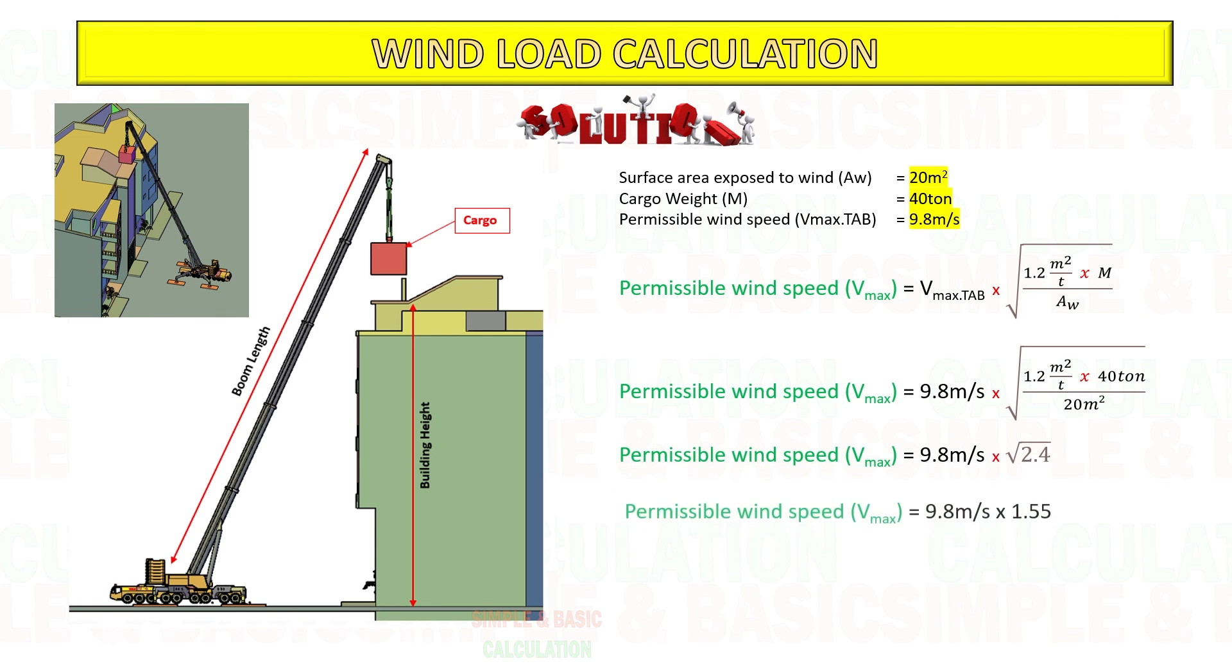Although the result exceeds the allowed wind speed based on the crane data, however, we must still take into account the manufacturer's recommended 9.8 meter per second which is lower than the calculated wind speed.